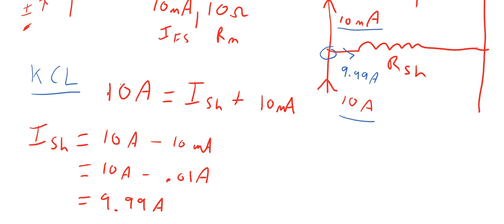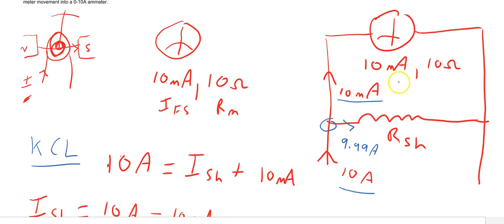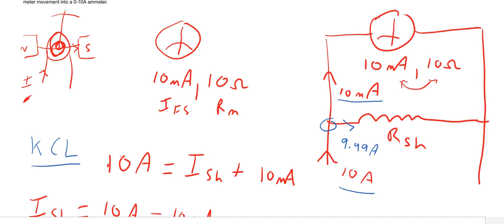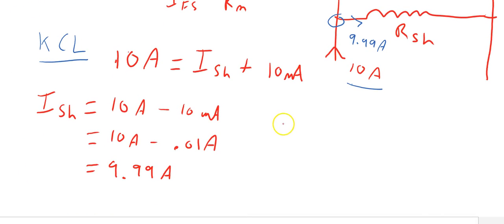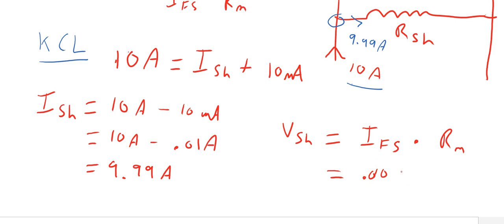If we know the voltage drop across the shunt resistor, we can use Ohm's law to determine the required value. The voltage drop across the meter movement is given by its two characteristics. Because the meter movement and the shunt resistor are in parallel, they have the same voltage drop. So the voltage across the shunt resistor equals the full-scale deflection current multiplied by the resistance of the movement: 0.01 amps times 10 ohms, giving us 0.1 volts across the shunt resistor.